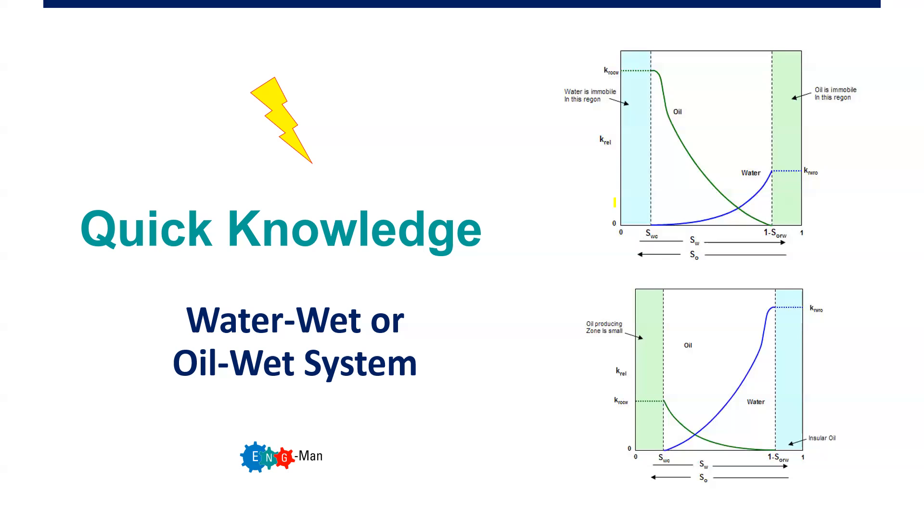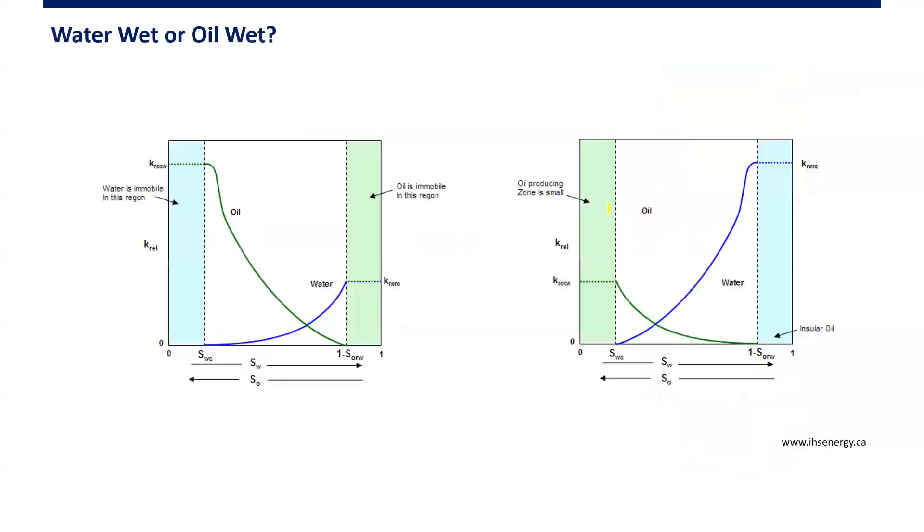How to very easily and quickly differentiate between water-wet and oil-wet systems. We have relative permeability curves here—relative permeability data. You know the relative permeability curve for oil and water in an oil-water system. You know this plot already, and now I ask you: